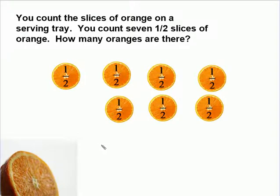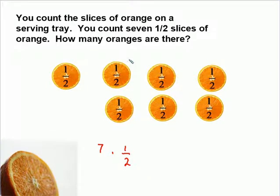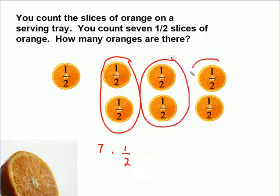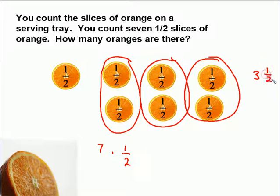We're going to be multiplying seven times one-half. Now it's very easy if we take a look at this as a picture — we can see how many oranges we're going to have. We have one here, one here, one here, and then one-half left over. So we'll have three and one-half. But since we don't always have pictures, let's take a look at it as a multiplication problem.